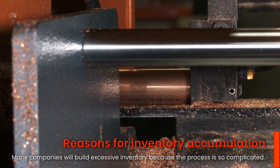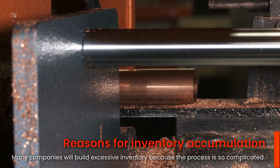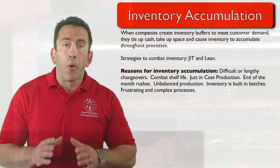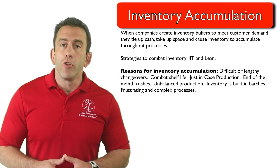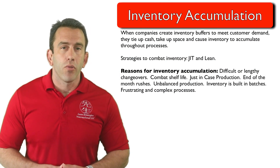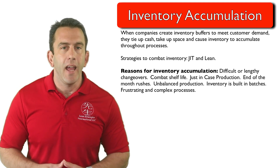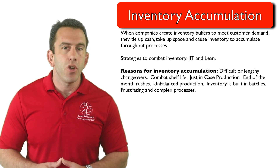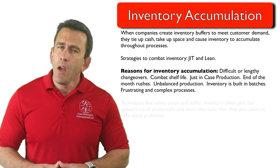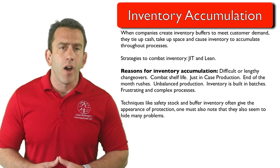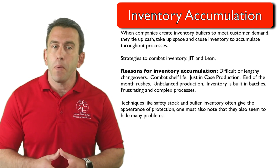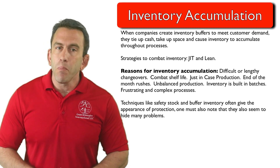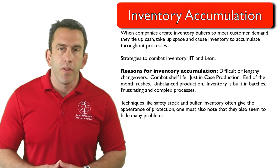With this in mind, buffering for demand changes and unexpected changes is not the worst thing that a company can do. Where the problem often gets out of control is when too much excess is created. Some safety stock on hand can be beneficial and help a company to combat sudden changes in demand or in production. While techniques like safety stock and buffer inventory often give the appearance of production, one must also note that they also seem to hide many problems within a process too.